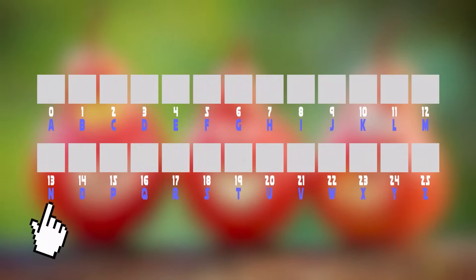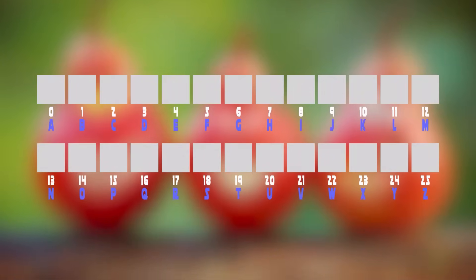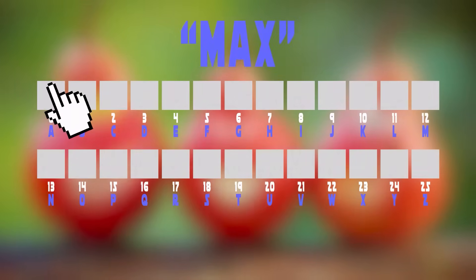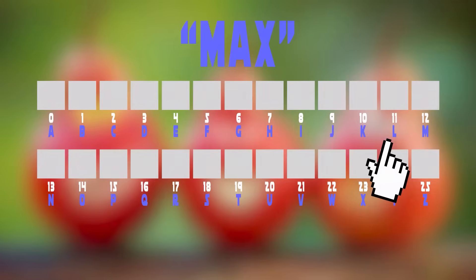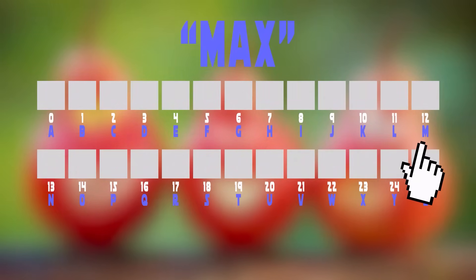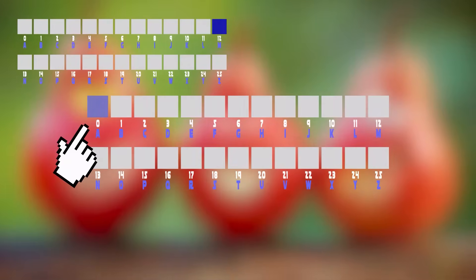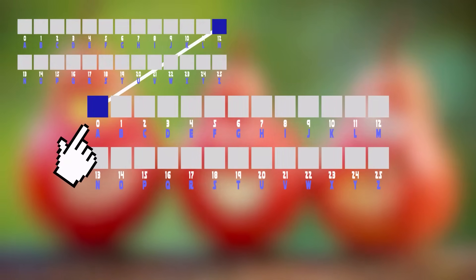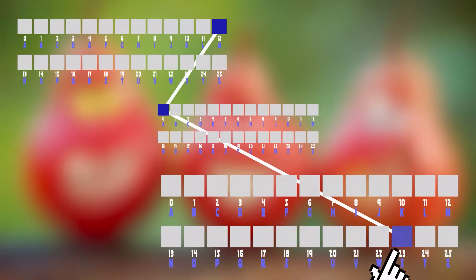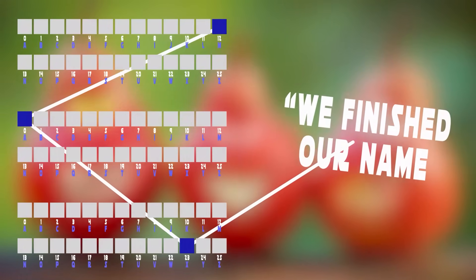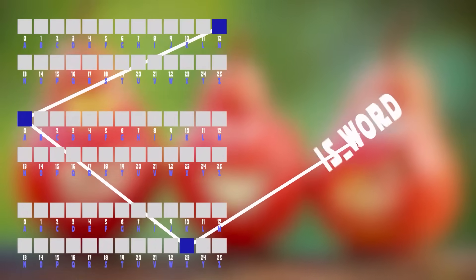Let's insert the name Max into this tree. We start at the root and go to index 12 in our pointers array, which represents the letter M. To proceed down that path we malloc a new node at position 12. Then we store the second letter, A, at index 0, pointing to a new node. Finally, the last letter X has index 23, so position 23 of our pointers array points to a new node. This last node means we finished the name, so we point to null and set the isWord property to true.